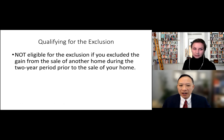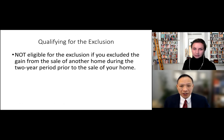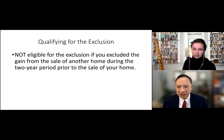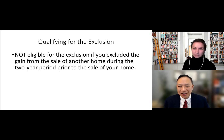A common situation: two people get married and each owns a house. They can't both sell in the same year and each claim the exclusion — you have to wait two years between sales to take advantage of it for each home. So if the first spouse sells a home, wait two years before the second spouse sells. This is an important planning tip — there's real planning involved when selling homes.